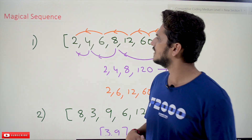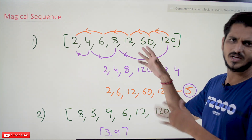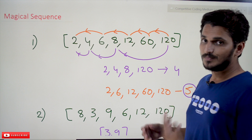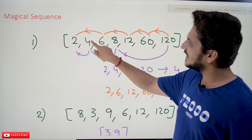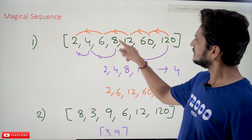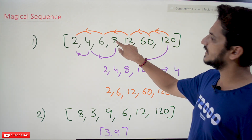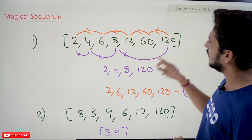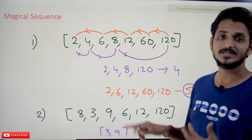Coming to today's example — what does 'magical sequence' mean? They will give a list of elements, for example: 2, 4, 6, 8, 12, 60, 120. So what is a magical sequence? 4 divided by 2 — yes, divisible. 6 divided by 4 — no. 8 divided by 4 — yes. 120 divided by 8 — yes. So the sequence formed is: 2, 4, 8, 120. This is one valid sequence.